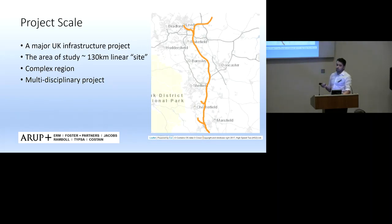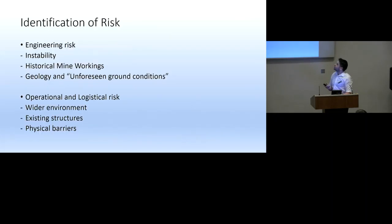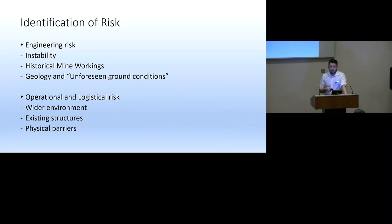The project, while most people regard it as a railway project, is very multidisciplinary - with input from ecology, environmental teams, structural, and many more. To target the walkovers, the first thing we need to do is identify risk. HS2 has many ways of identifying and classifying risk - I've broken it down into engineering risk and operational and logistical risk. Engineering risks include instability, historical mine workings, and geology and unforeseen ground conditions. Operational and logistical risks include wider environment, existing structures, and physical barriers that might prevent the scheme being developed successfully.